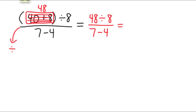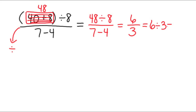So now we just have to figure out what we have in the numerator and what we have in the denominator. In the numerator, we have 48 divided by 8. 8 times what is 48? That is 6. In the denominator, we have 7 minus 4. 7 minus 4 is 3. That means you are going to take 6 divided by 3. And 6 divided by 3 is 2.